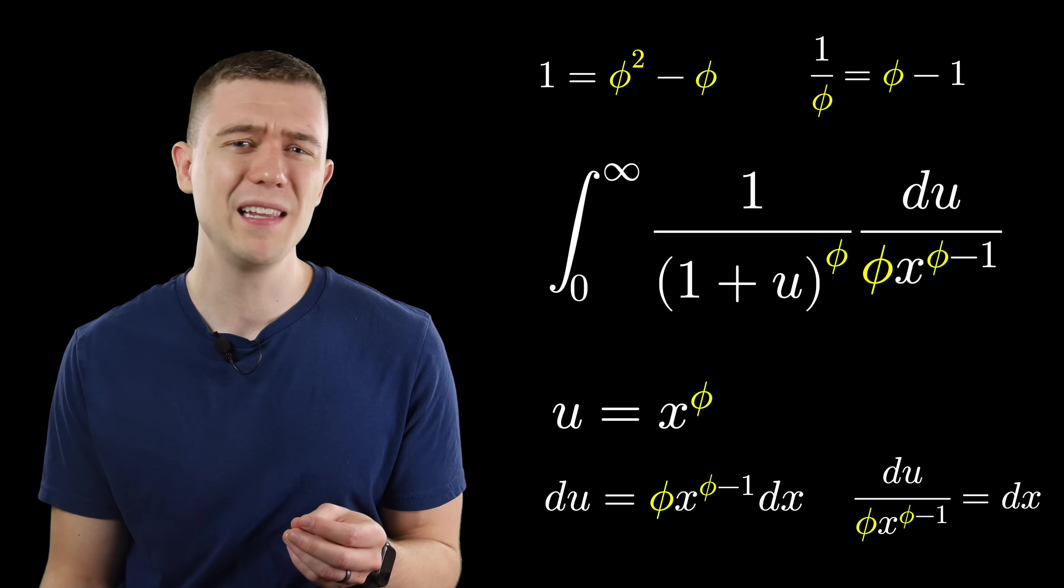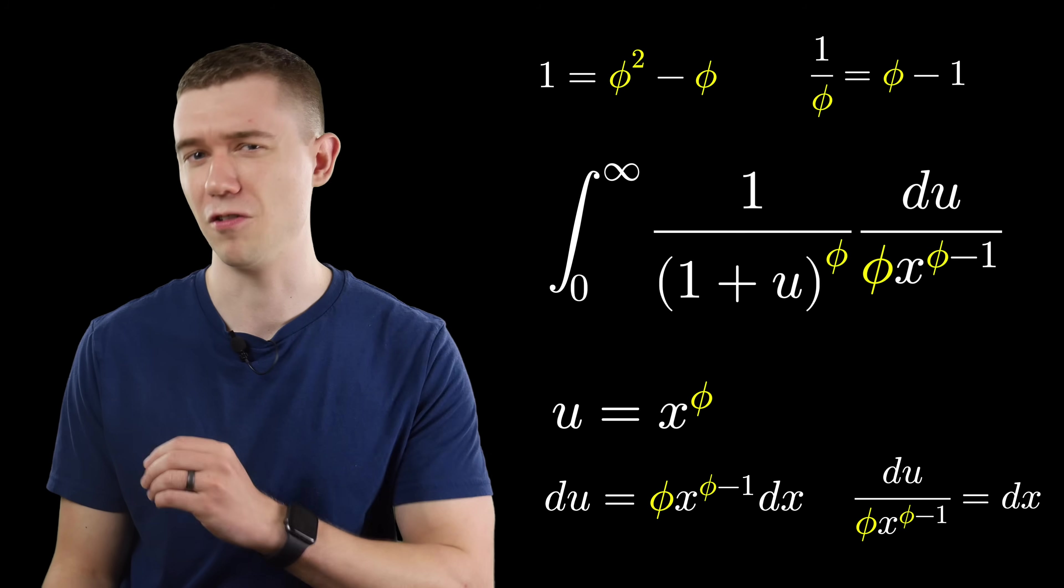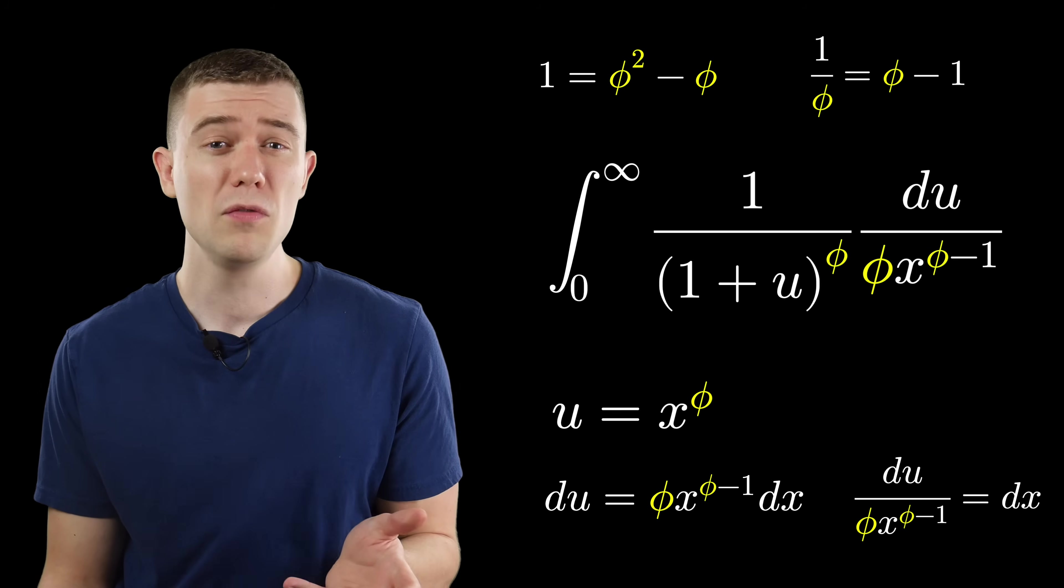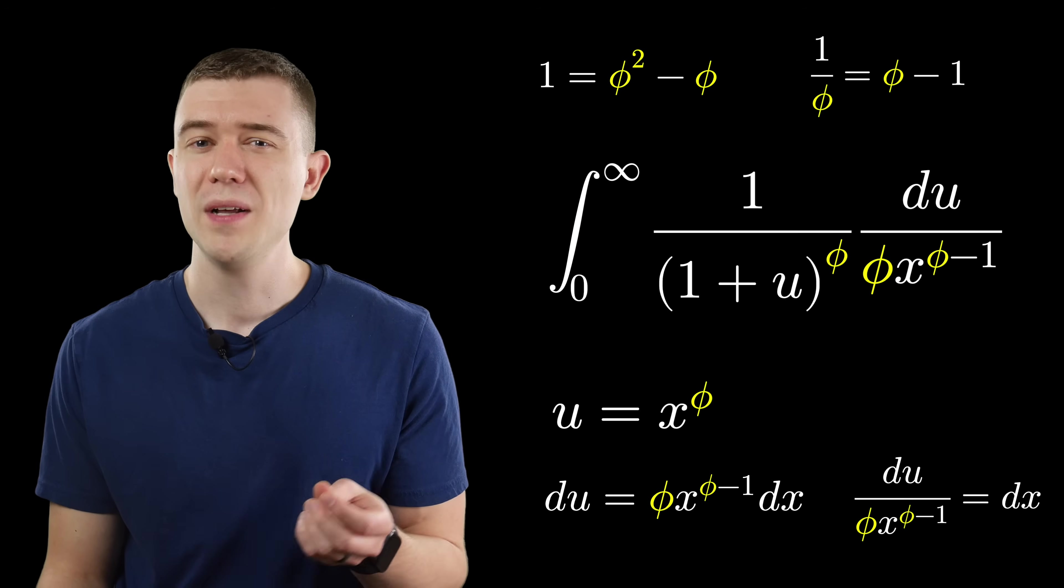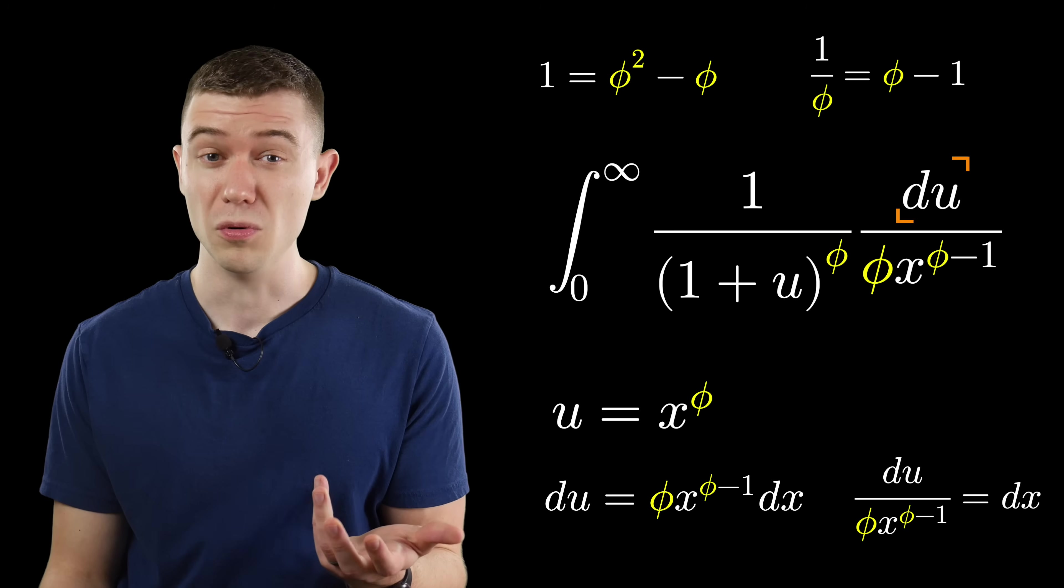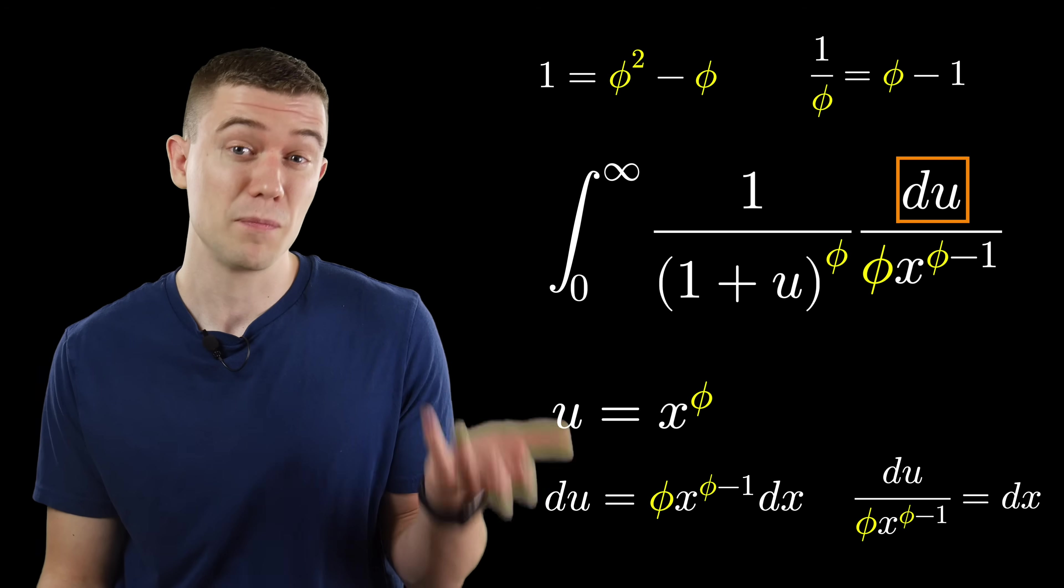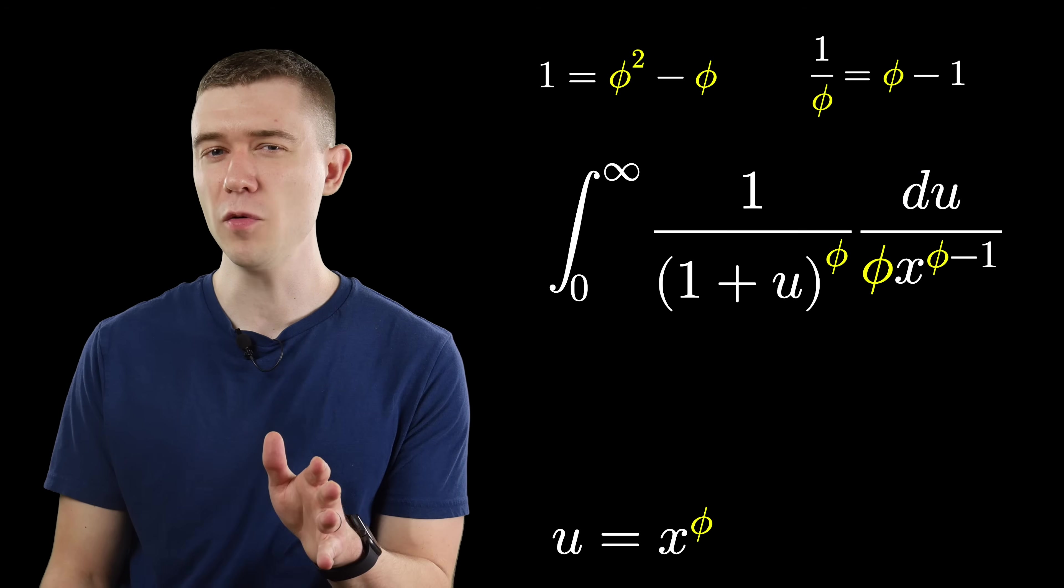Making this substitution leaves us with a bit of a cluttered integrand, though. The 1 over phi is a constant, we can pull that outside the integral, but the only variable inside should be u, now that we're integrating with respect to u.